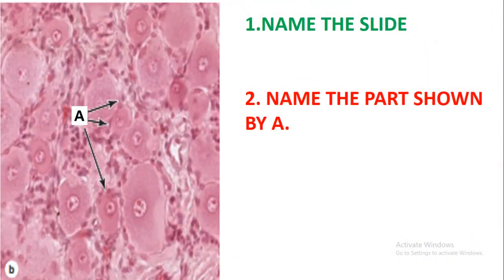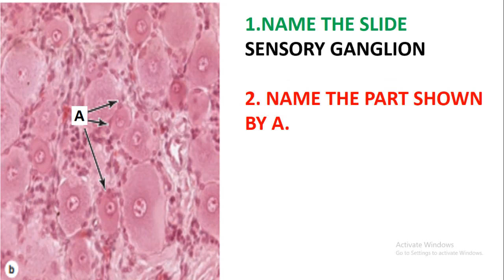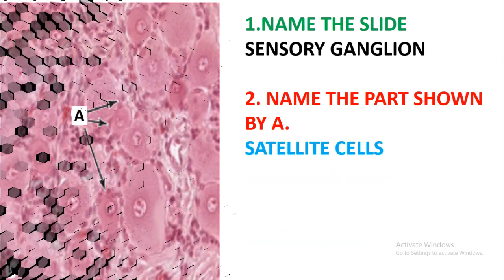The first slide we have been given and asked to name — if you look at this slide, it is having a lot of neural bodies and this slide is just a sensory ganglion. We can name the ganglion cells, which are just the cell bodies in the ganglion.